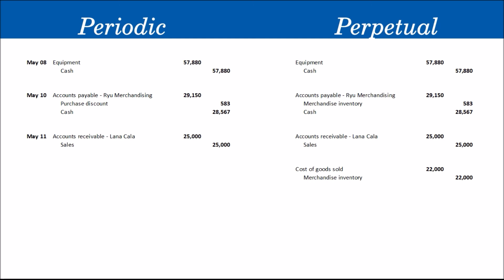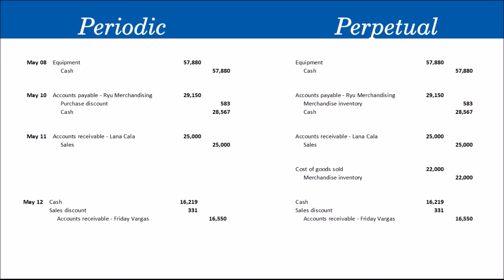For May 12, Friday Vargas paid her account in full. Her transaction was on May 3, with terms 2/10, n/30 — the discount period ends May 13. Since she paid on May 12, she qualifies for the 2% discount. The 2% of 16,550 is 331 pesos, so we receive cash of 16,219. We debit Cash for 16,219, debit Sales Discount for 331, and credit Accounts Receivable — Friday Vargas for 16,550. This entry is the same under the perpetual system — no additional inventory entry is needed since inventory was already recorded when the sale occurred.